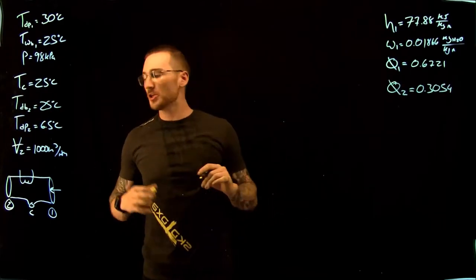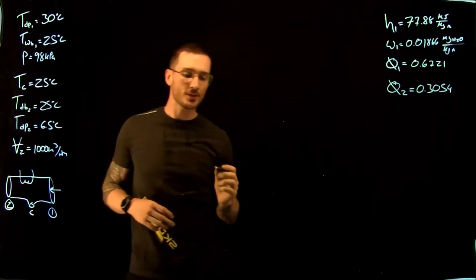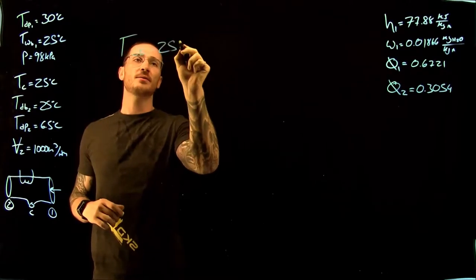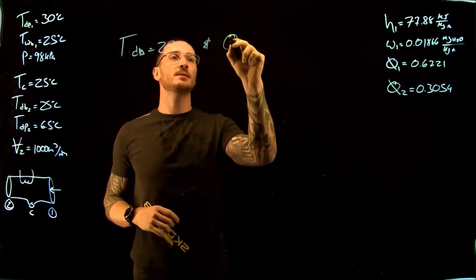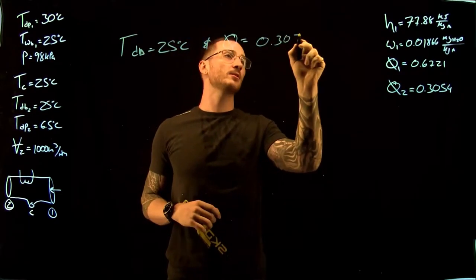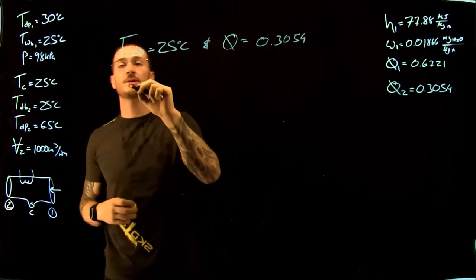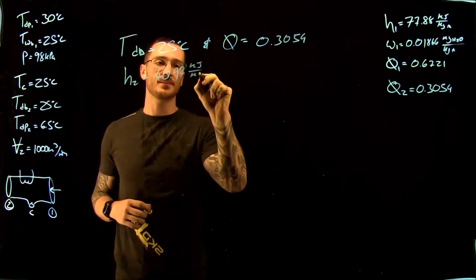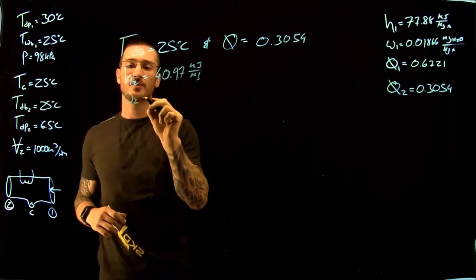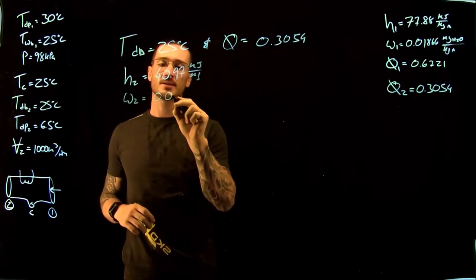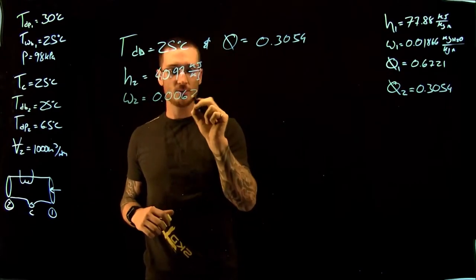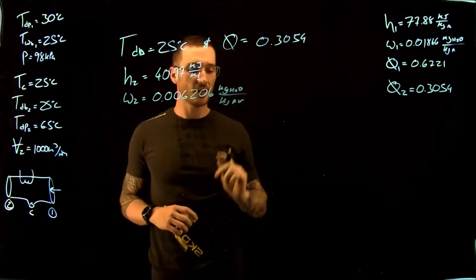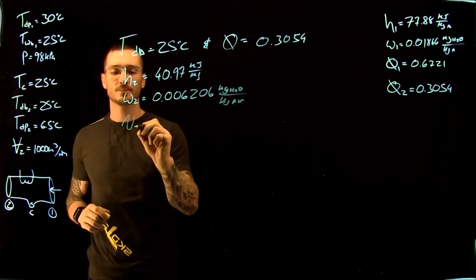We now have enough information at point 2 to go to our psychrometric charts. At a dry bulb temperature of 25°C and a relative humidity of 0.3054, the enthalpy at point 2 is 40.97 kJ/kg, the specific humidity at point 2 is 0.006206 kg of water per kg of air, and the specific volume at point 2 is 0.882 m³/kg.